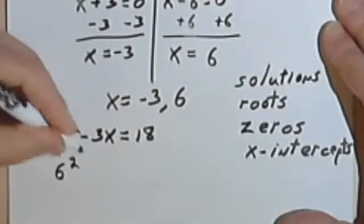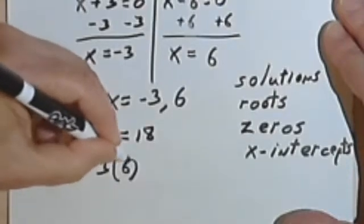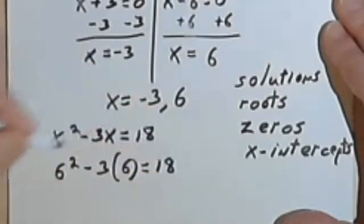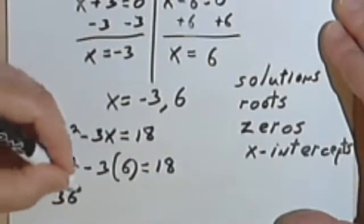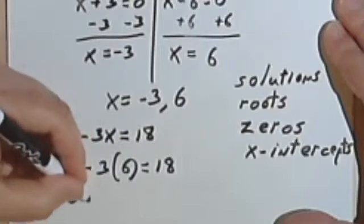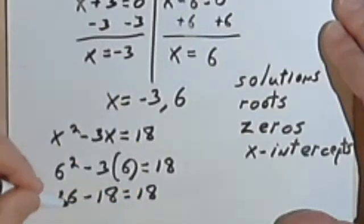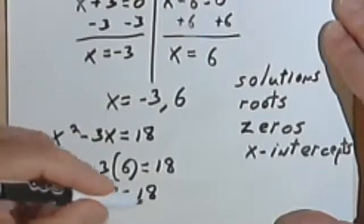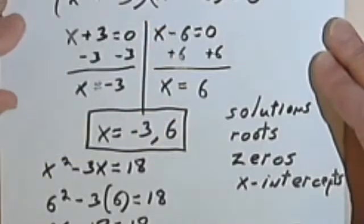Let's plug in a 6 to the other answer. 6 squared minus 3 times 6 equals 18. Let's see if that works. 6 times 6 is 36. 3 times 6 is 18, so that's minus 18 equals 18. 36 minus 18 does equal 18. So these answers check.